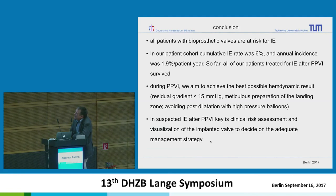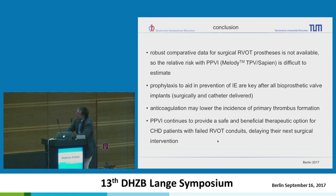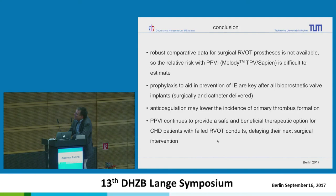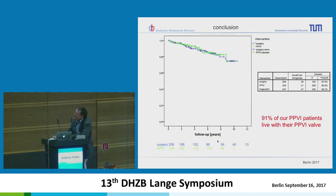In suspected IE after PPVI, clinical risk assessment and visualisation of the implanted valve are key to deciding on the adequate management strategy. Robust comparative data for surgical RVOT prostheses are not available. Prophylaxis for prevention of IE is key after all bioprosthetic valve implants, surgical and catheter-delivered. Anticoagulation may lower primary thrombus formation — whether to use aspirin remains an open question. PPVI continues to provide a safe and beneficial therapeutic option for CHD patients with failed RVOT conduits, delaying their next surgical step.